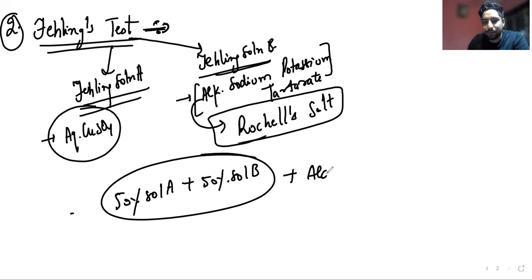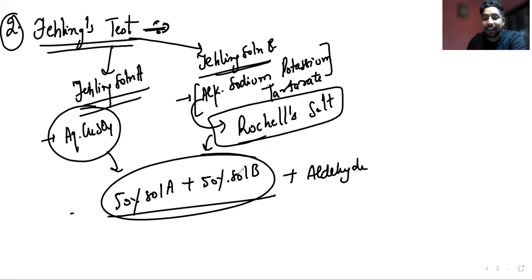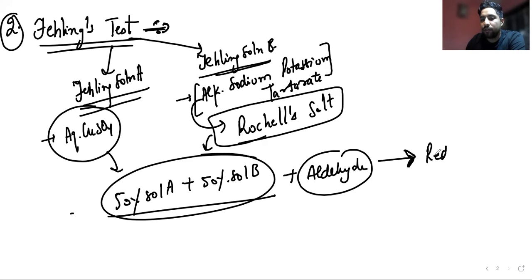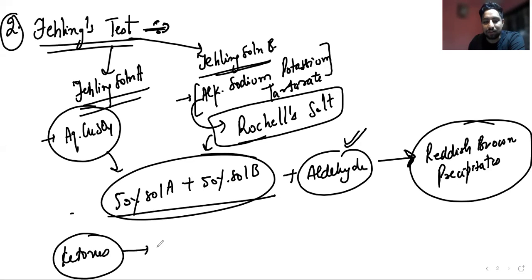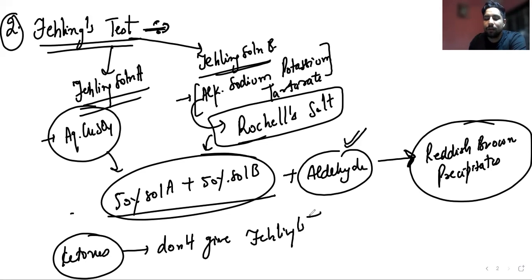When equal quantities of Fehling's solution A and B are added to an aldehyde and reddish-brown precipitates are formed, that indicates the given compound is an aldehyde. Ketones do not give the Fehling's test either.